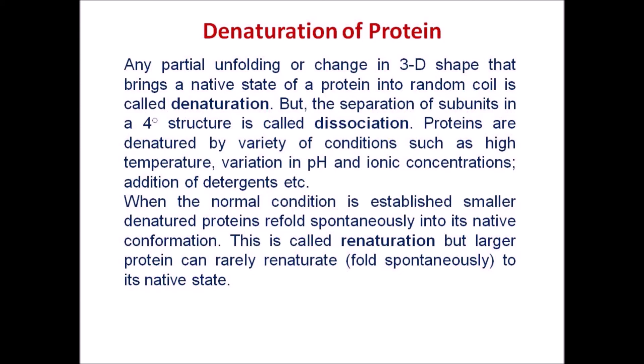Denaturation of protein is any partial unfolding or change in 3D shape that brings a native state of a protein into a random coil. The separation of subunits in a quaternary structure is called dissociation. Proteins are denatured by conditions such as high temperature, variation in pH and ionic concentration, and addition of detergents.